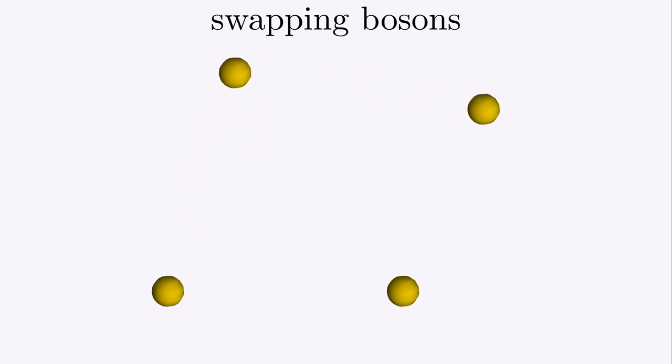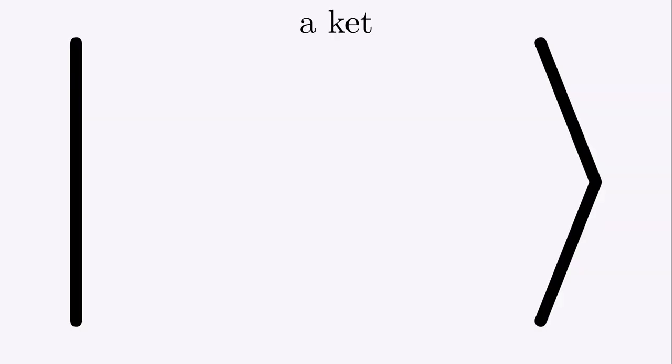And when you swap these around, the universe doesn't notice. Reality has not changed. We need a way of writing quantum mathematics. There's one main rule to learn first. Here it is. If something can happen, then put a ket around it to make a quantum state. You put the thing that happens inside the ket, and then outside the ket is the quantum mathematics.